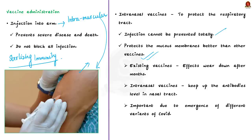Other than this, there are also other reasons why intranasal vaccines are considered better. Existing intramuscular vaccines induce antibodies and some of them end up in mucous membranes of the nose and throat, but the protection intranasal vaccines provide is higher. In the case of other vaccines, as the antibody levels start to drop months after vaccination, the early nasal protection starts to fade. But in case of intranasal vaccines, they will keep up the antibody levels at the site of infection — in the nasal tracts. With new variants of coronavirus emerging, a vaccine that could provide sterilizing immunity at the site of infection is the need of the hour, which is why many vaccine companies are working on developing intranasal vaccines.